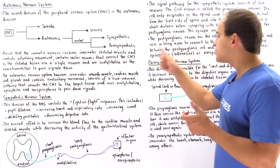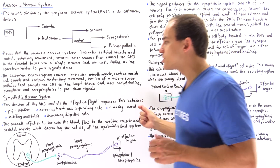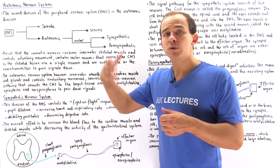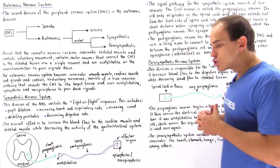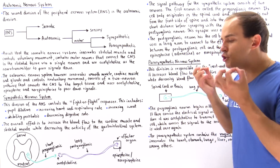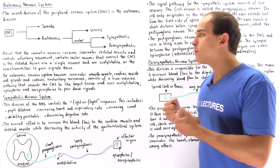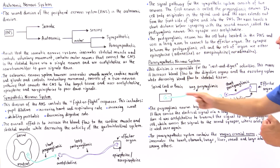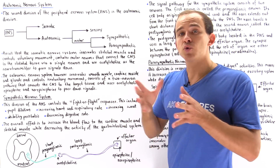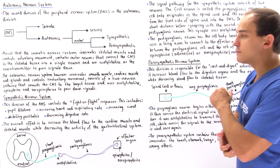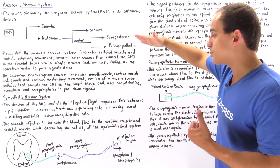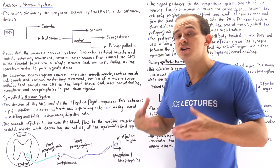Now let's move on to our parasympathetic nervous system. In many ways, it basically reverses these effects. Suppose we just ate and we sit down and begin watching TV. As we watch television, we're not using our muscles as much, so we don't need to produce ATP to contract our muscles. The parasympathetic system decreases the heart rate and decreases our respiration rate — basically the opposite of what the sympathetic nervous system did. Our sweating also drops.